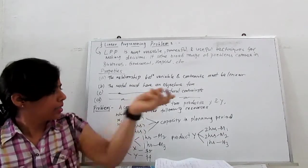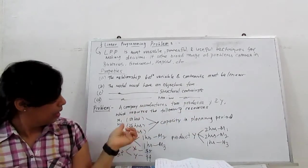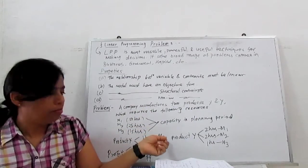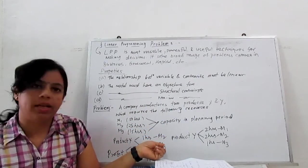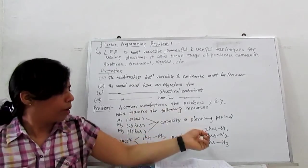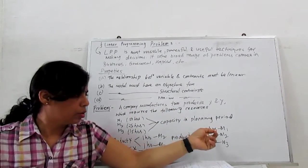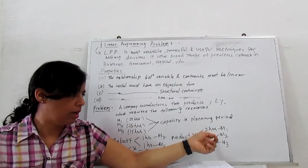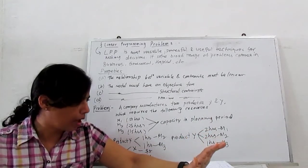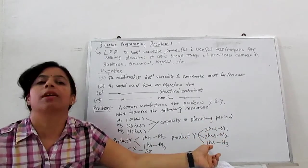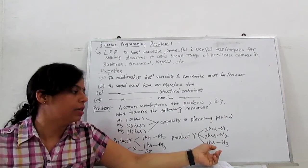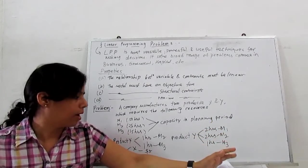Product X needs one hour in machine two and one hour in machine three. Product Y needs two hours in M1 (machine one), two hours in M2 (second machine), and one hour in machine three.